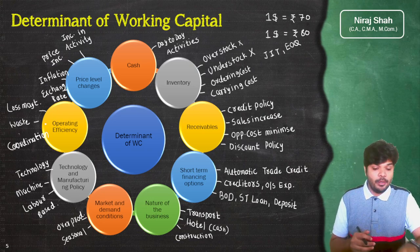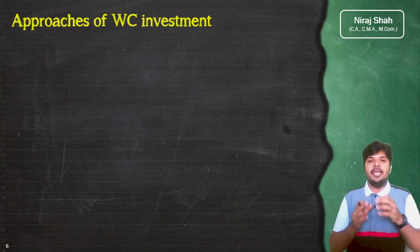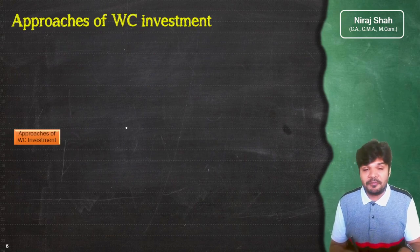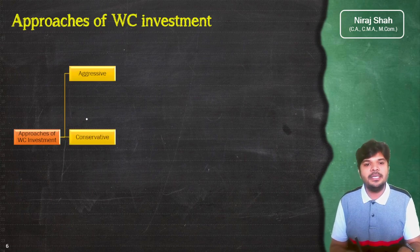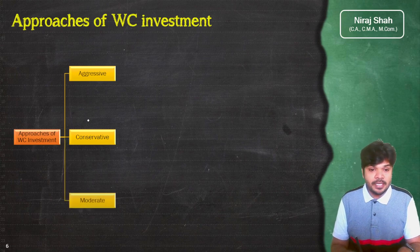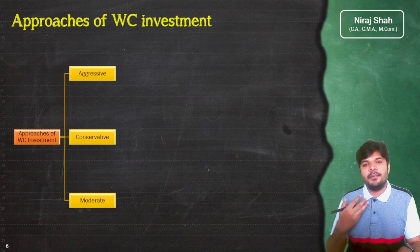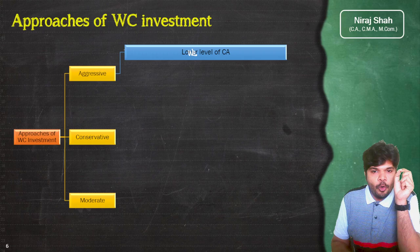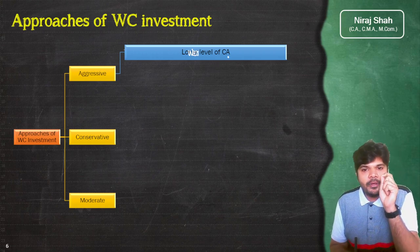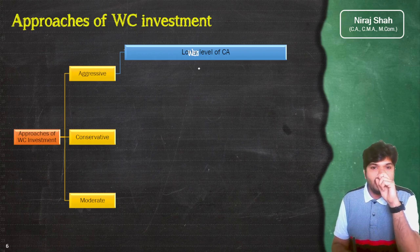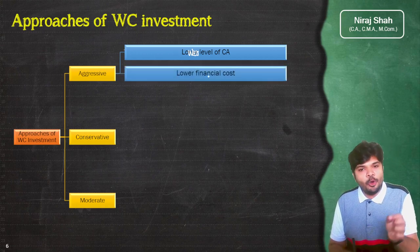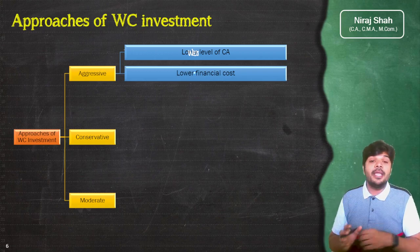Determinants of working capital के बाद अब approaches of working capital investment देखते हैं। Generally तीन तरह के approaches working capital के लिए define किये गए हैं — एक है aggressive working capital investment policy, दूसरी है conservative working capital investment policy, और तीसरी है moderate policy। Aggressive policy के अंदर lower level of current assets होता है — आप current assets में ज्यादा investment नहीं करते, कम से कम investment करते हो।